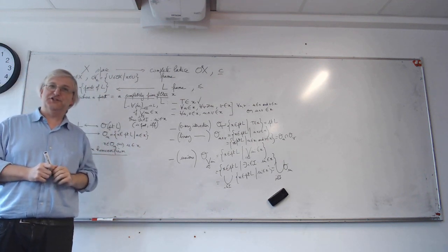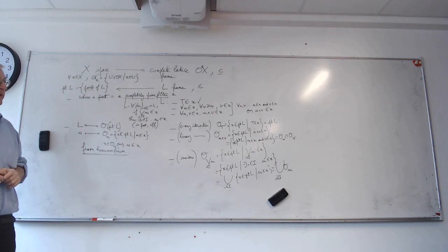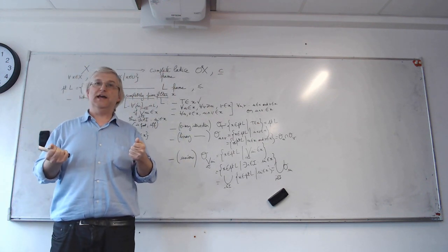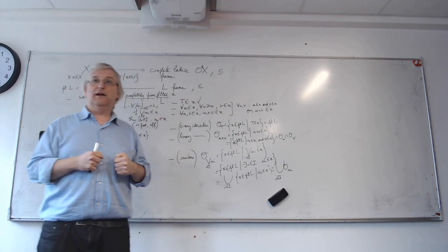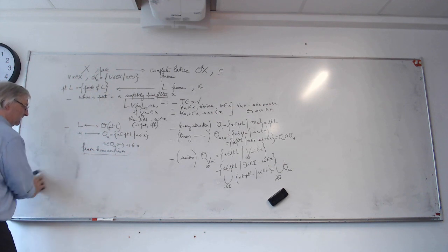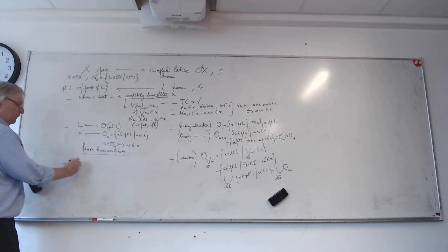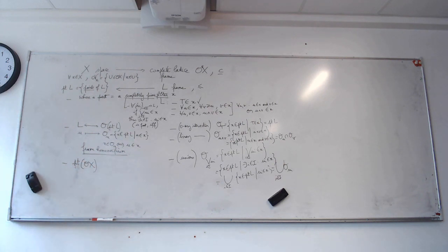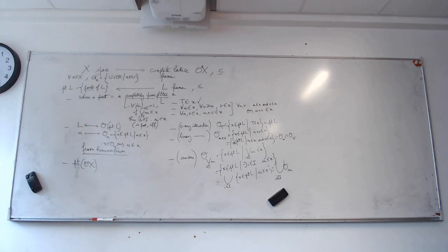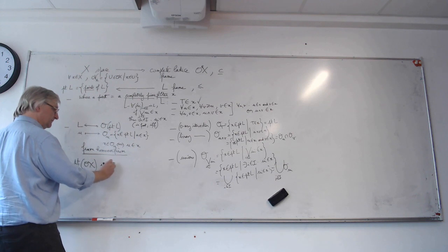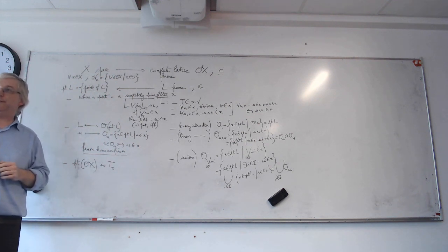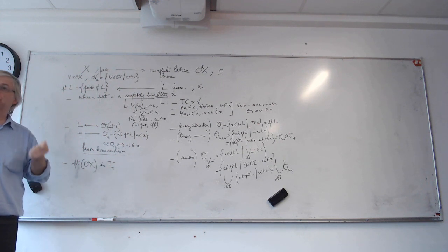You'll be disappointed if the answer is no in general. First, we had talked about T0 spaces. A T0 space is a space in which if two points have the same open neighborhoods, then they are equal. You can check that if you start from a topological space x and do Pt(O(x)), you want to compare that with x. You realize that this space always has some properties that a general space need not have — typically, it is always T0.